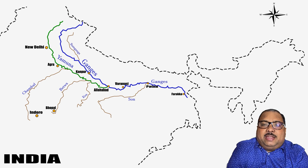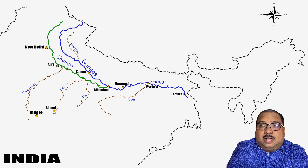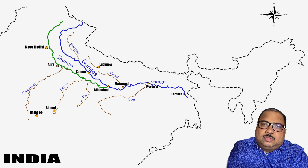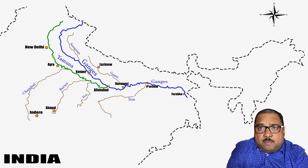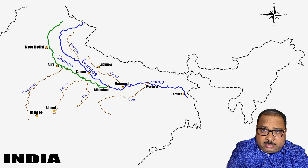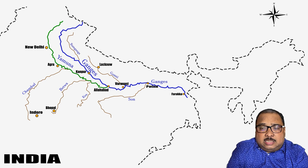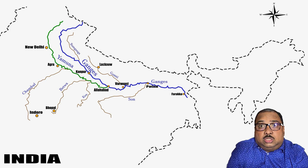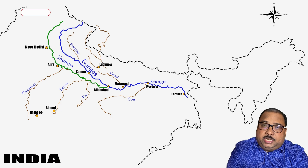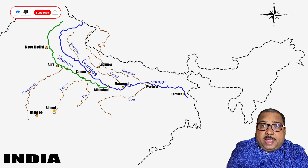The important left bank tributaries of Ganga are Ram Ganga, Gomti, Ghaghra, Gandak, Koshi and also Mahananda. Gomti is a unique river that, unlike other rivers, does not originate from a mountain. Rather it originates from the plain land and then meets Ganga in the state of Uttar Pradesh. The capital of Uttar Pradesh, Lucknow, is situated on the bank of river Gomti.